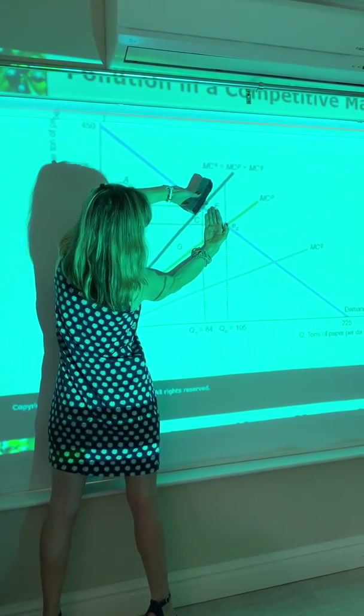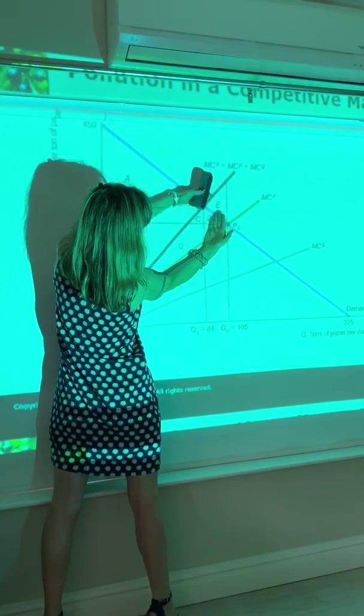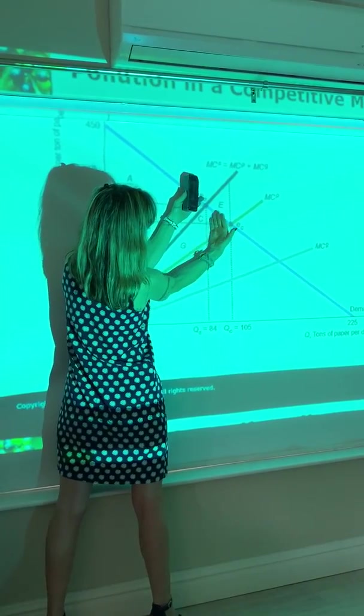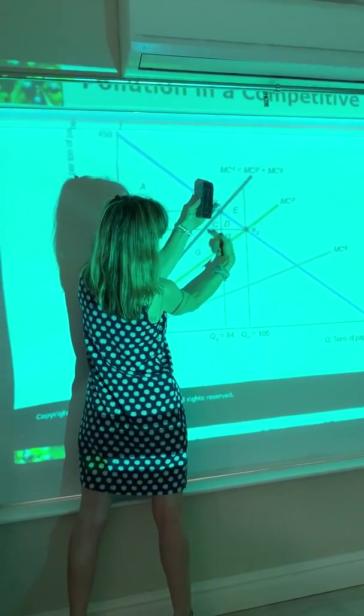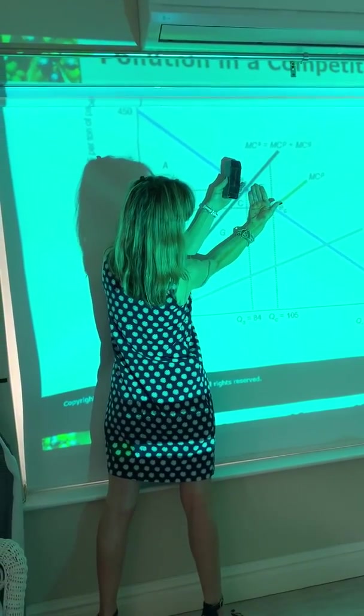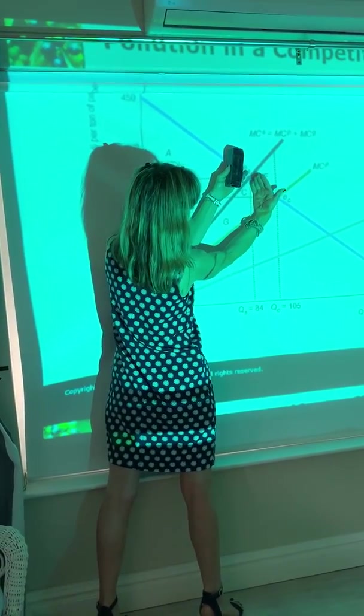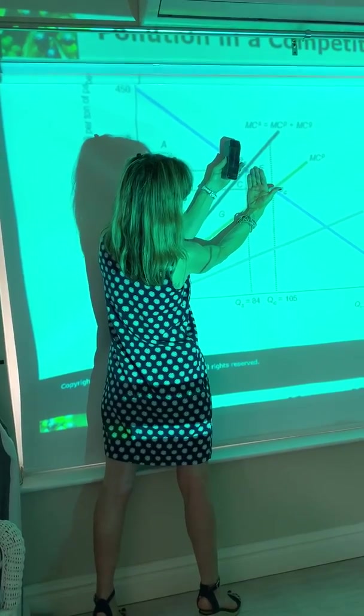Subtract off the externality cost up until what's produced. It's going to be area G and C, the distance between these two curves up until what's produced.